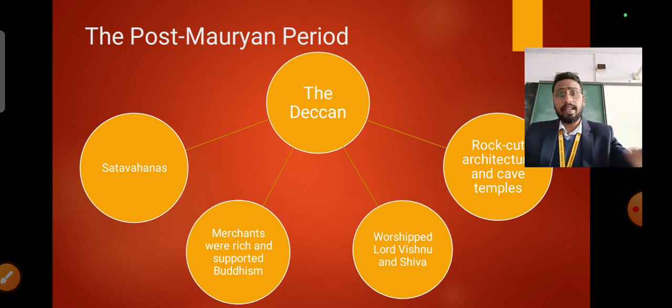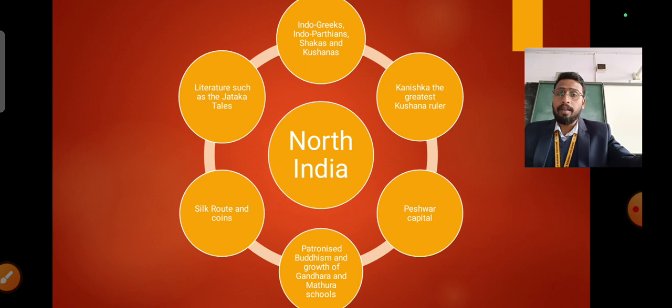Now moving on from the Deccan, northern India had a very interesting timeline when compared to the Deccan side. Because of the fall of the Mauryan empire, the state of Magadha which was a great state at that time shrank in size and lost its power.